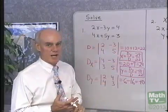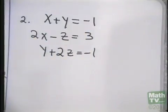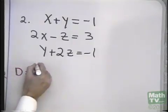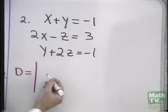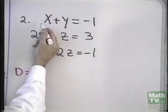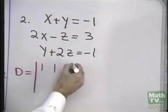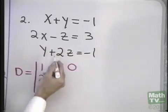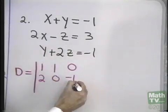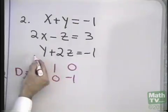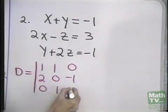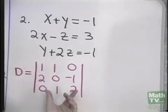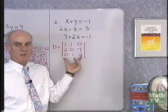Let's try Cramer's Rule now with a 3 by 3 system. To use Cramer's Rule here, we first form the determinant big D — it's the determinant of the coefficients of x, y, and z. In my first equation, I have 1x, 1y, and 0z. In my second equation, I have 2x, 0y, and negative 1z. In my third equation, I have 0x, 1y, and 2z. So that's my determinant big D, the determinant of just the coefficients of x, y, and z in my original system.